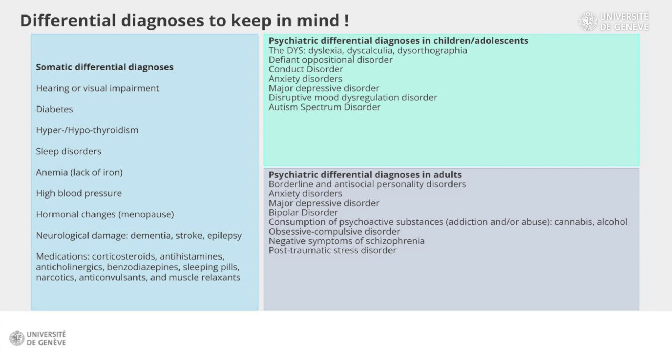There are somatic and psychiatric differential diagnoses. Let's first see the somatic differential diagnoses. One needs to be sure that inattention or hyperactivity are not better explained by another illness, such as having trouble concentrating because you can't hear or see well. It's silly, but you have to think about it. Other diseases, such as diabetes, in which hypoglycemia can mimic attention difficulties or a lack of motivation, should be ruled out. We will have the same thing in anemia or hypothyroidism.